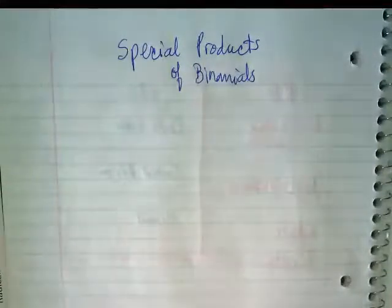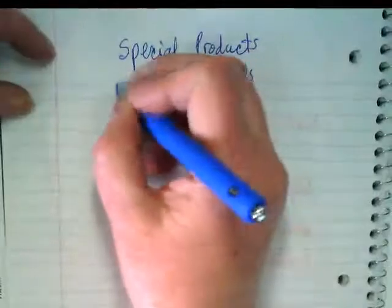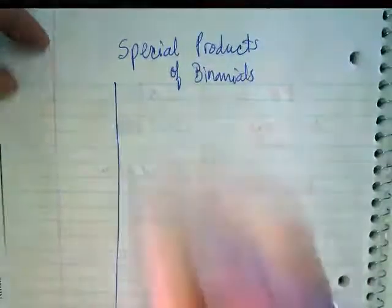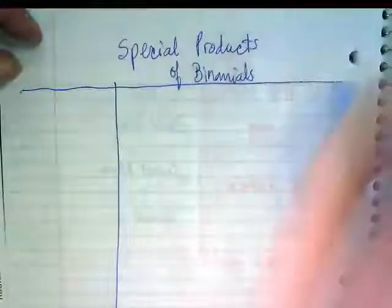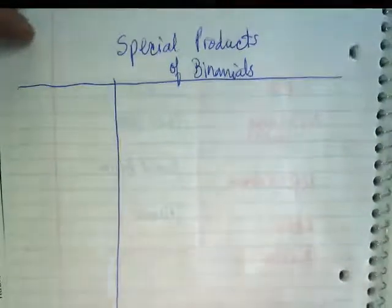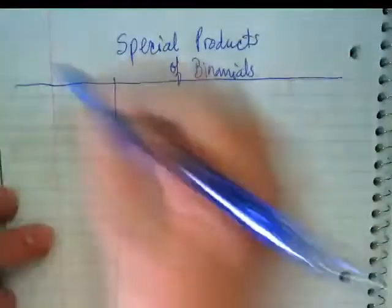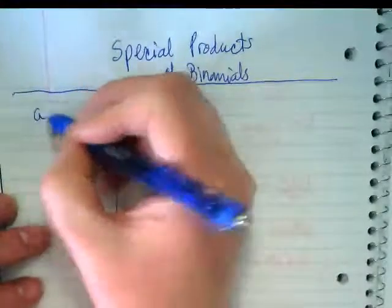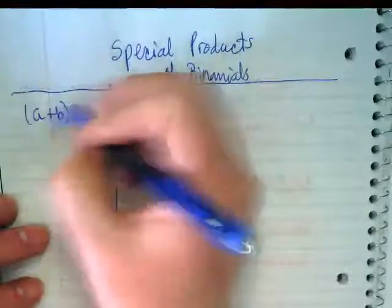We're going to treat today's notes like Cornell notes, so I'd like you to draw a line down the left side of the page. We're going to put some algebraic examples on the left. The first one we're starting with is (a+b)².